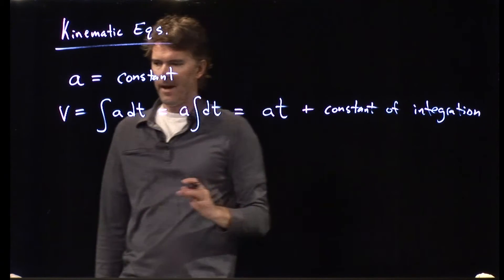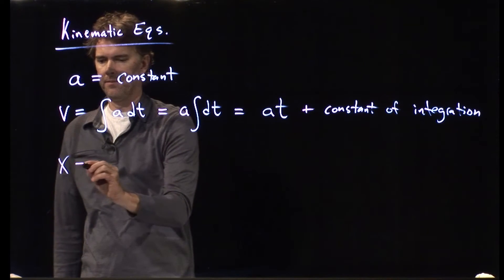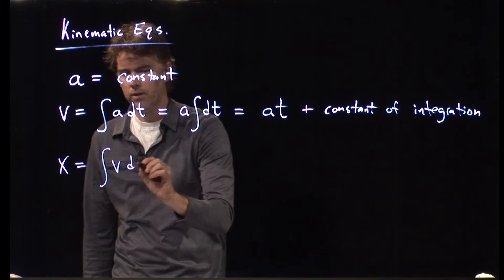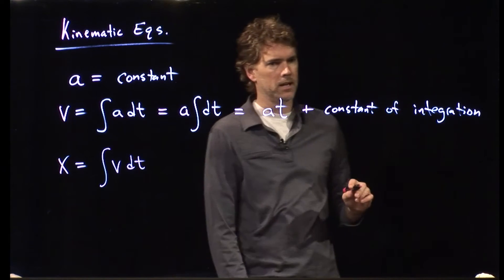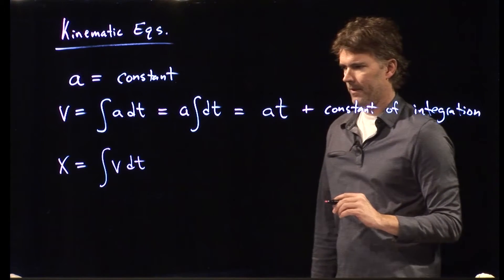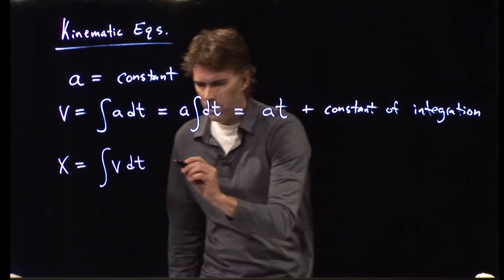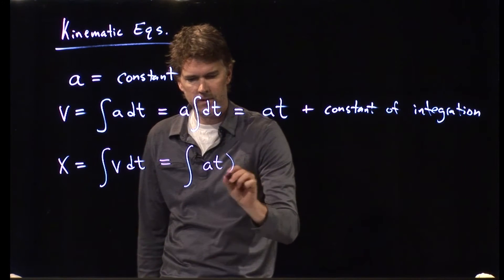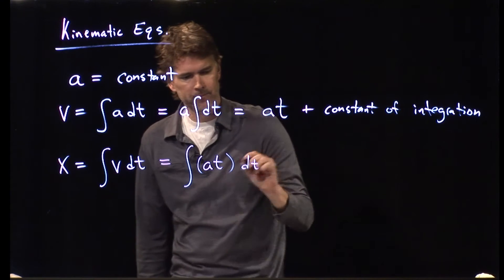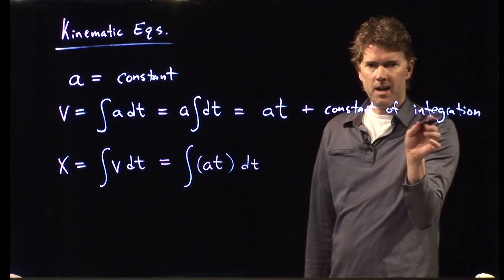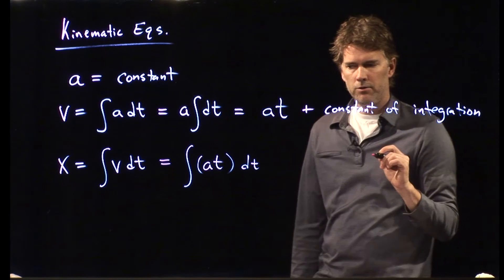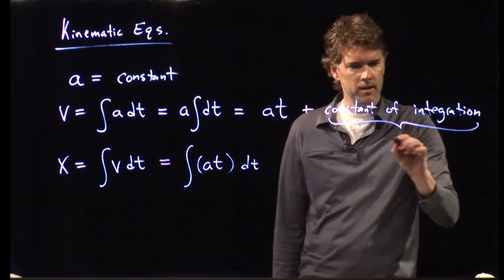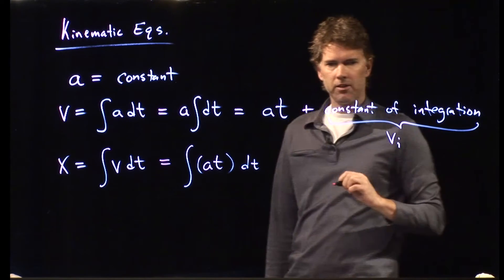All right. What about position? Position x is the integral of velocity times over time. And we know exactly what velocity is now. It is a t dt. But we have this constant of integration here to worry about. So we have to include that. Let's call that thing initial velocity v i.